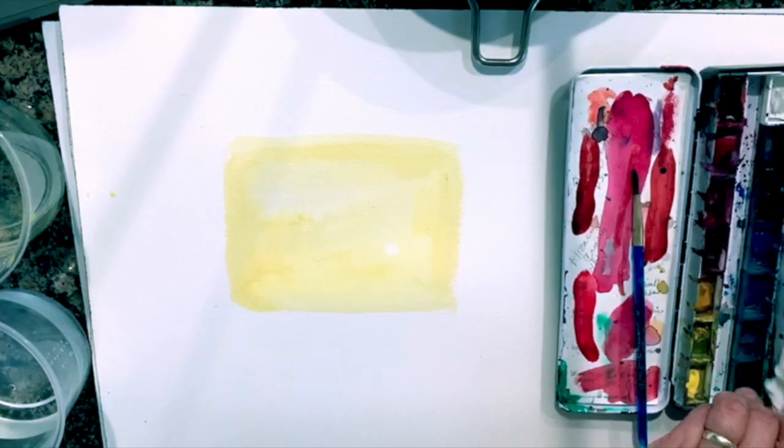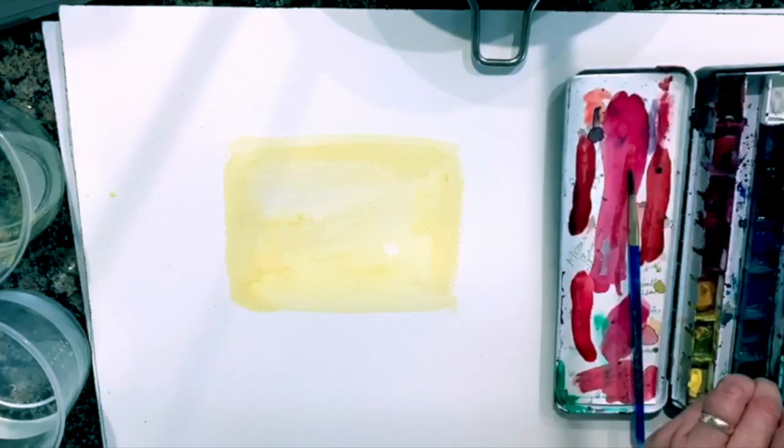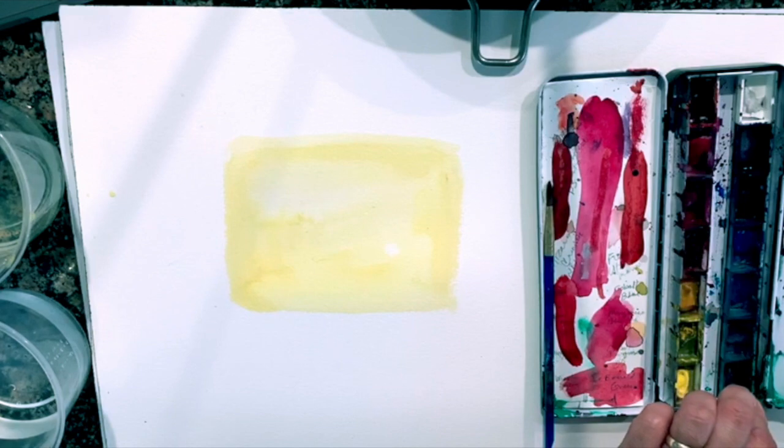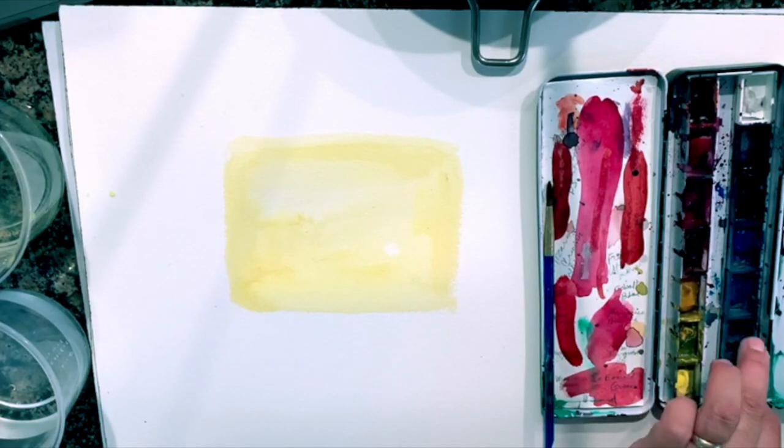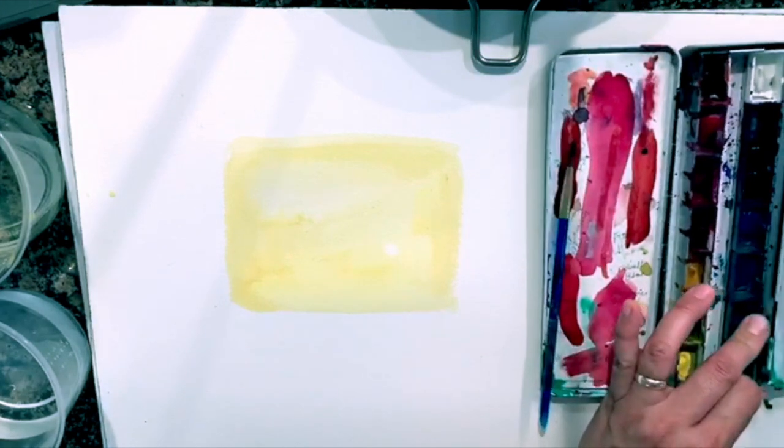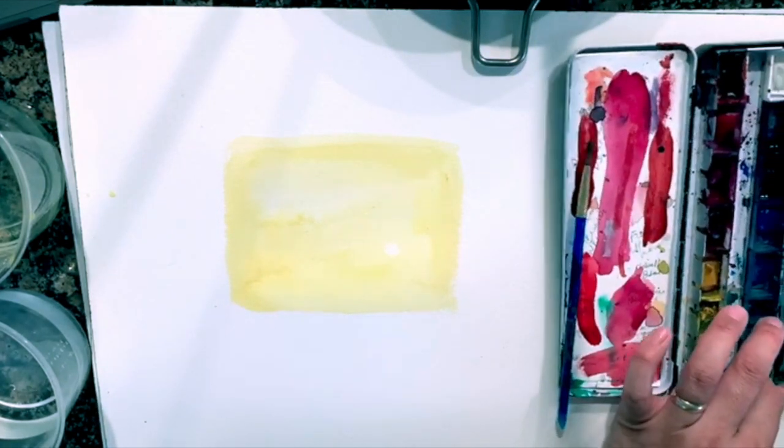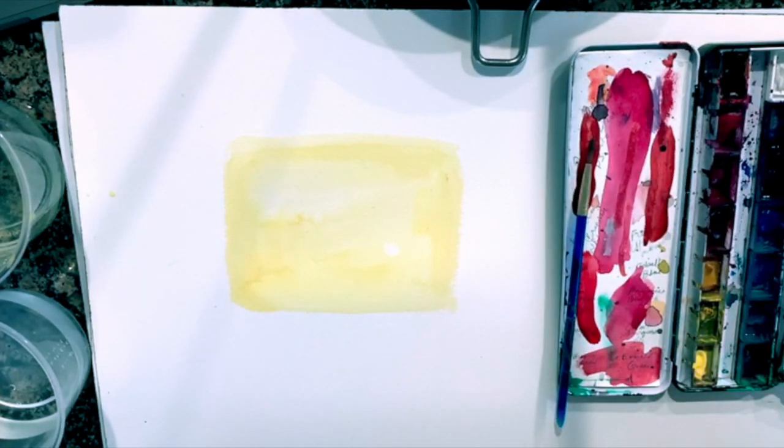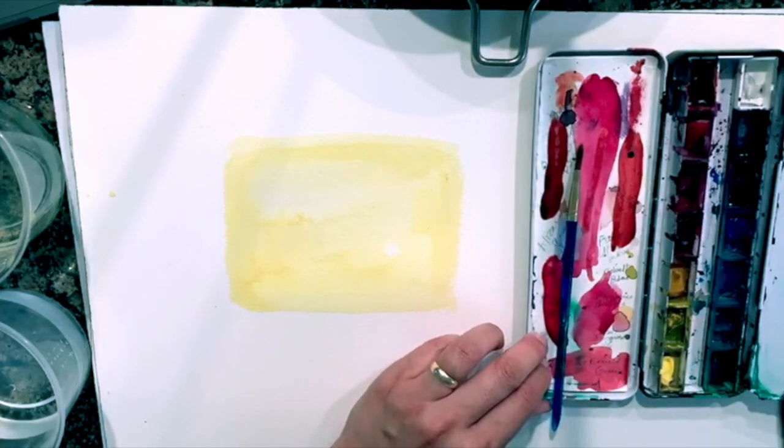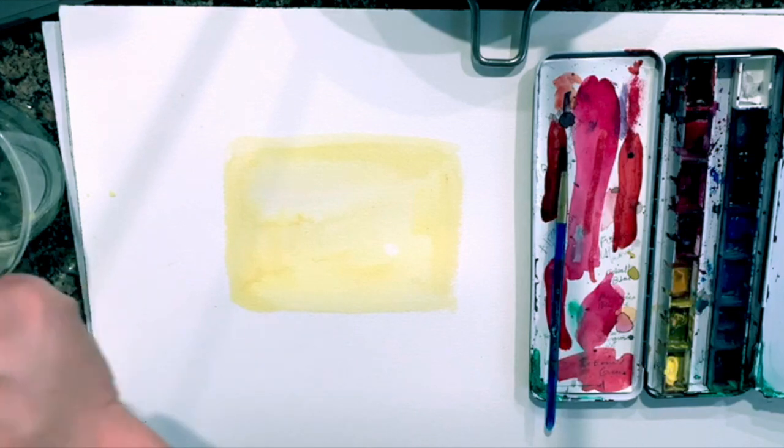And we also have two containers of water to clean your brushes. One is for dirty water, one is clean water. And just have a paper towel to blot off the excess paint. And those will be the supplies that you'll need for this evening.